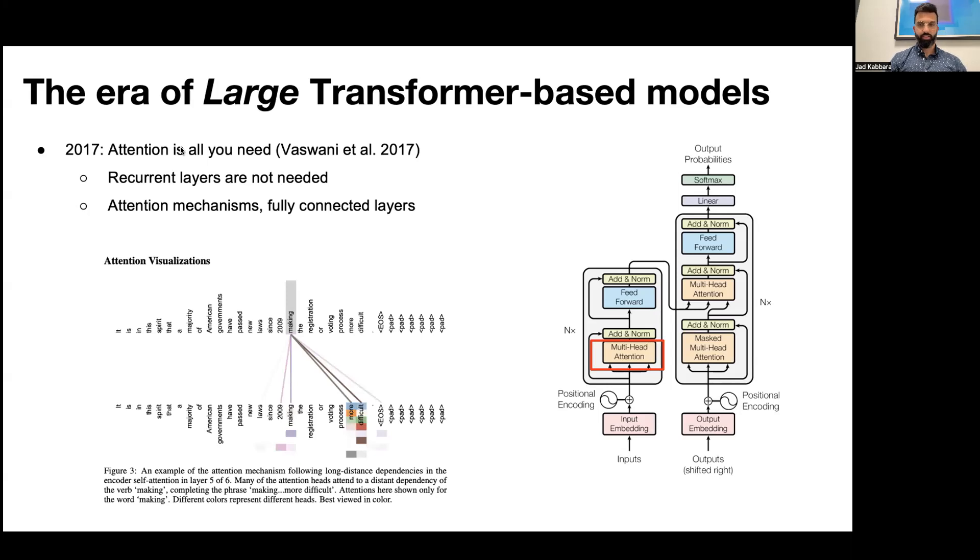Different attention heads weigh different words and then weights from different heads are combined to get the likeliest tokens to follow the verb making. In addition to outperforming earlier models on various tasks, the transformer allows given its architecture for significantly more parallelization leading to faster training times compared to earlier models like recurrent neural nets or convolutional neural nets.